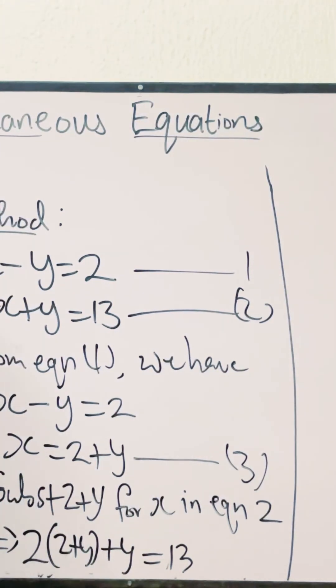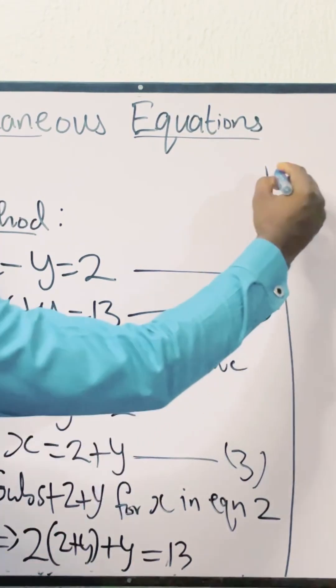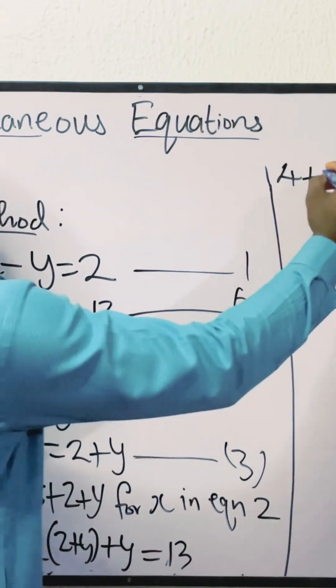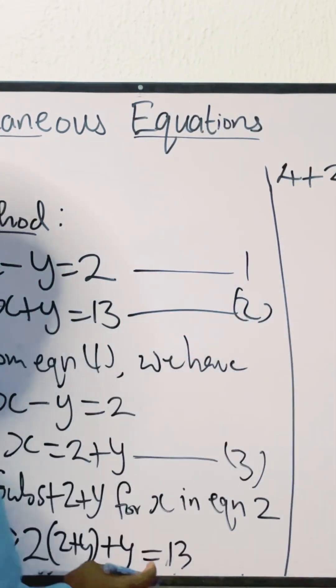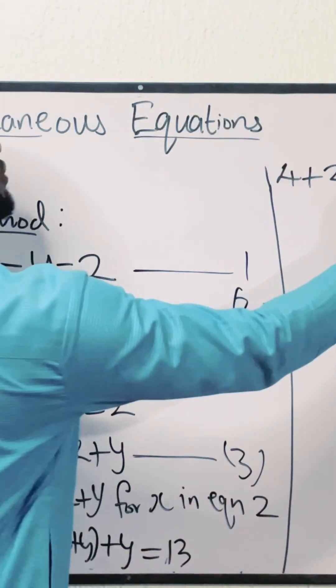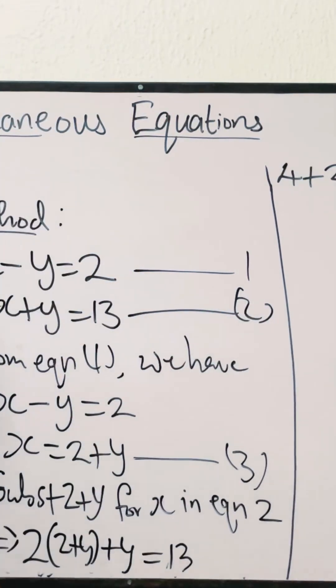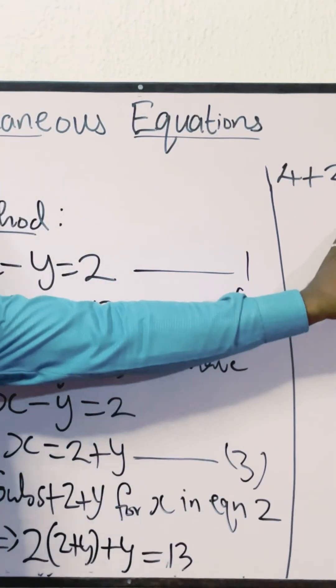Let's simplify this expression. 2 opens the bracket giving us 2 times 2, which is 4, plus 2 times y, which is 2y. And then plus y equals 13. As you can see, the only variable left here to find is y.